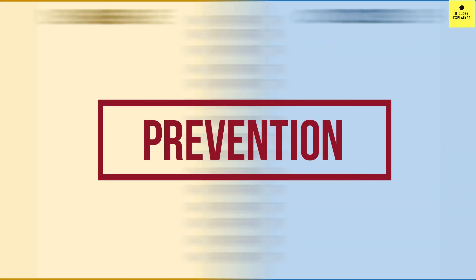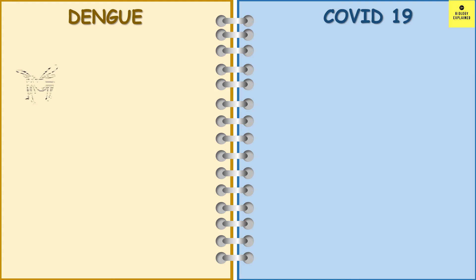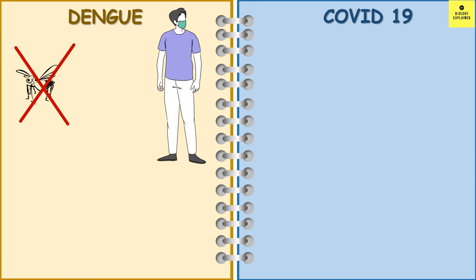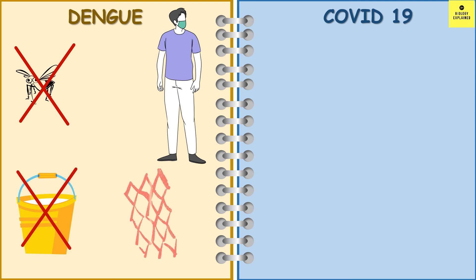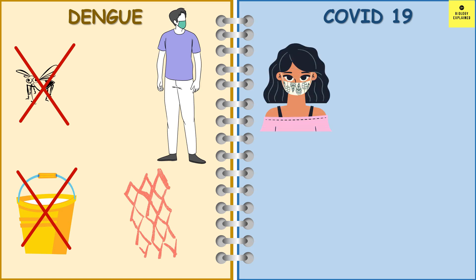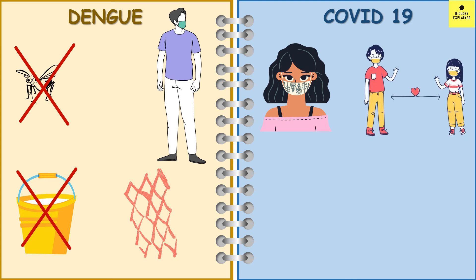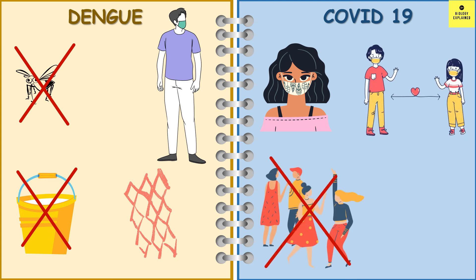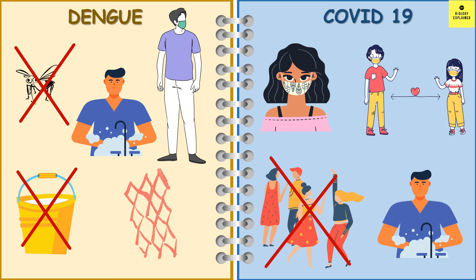How to prevent? In case of dengue, prevent mosquito bites to prevent dengue infection. Wear full sleeves and full trousers if you are in a dengue-prone area, and you should not have clean but stagnant water near your home. Use mosquito nets when necessary. In case of COVID-19, we have to wear masks, maintain physical distance, avoid gatherings, and in both cases personal hygiene is very important.